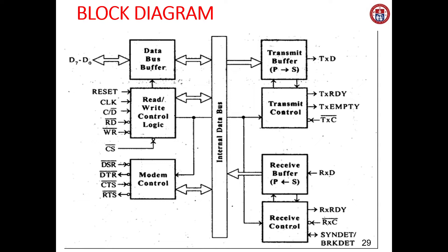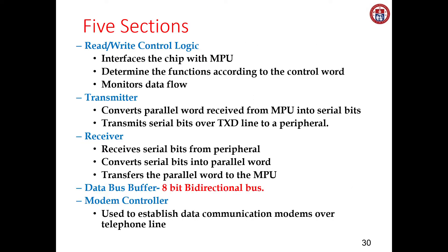We are going to look at each section and the pins associated with every section. The first section is the read/write control logic. It mainly interfaces the chip with the microprocessor unit and determines the functions according to the control word — whether the microprocessor is going to perform a read or write operation. It also monitors the data flow between the microprocessor and the outside world.